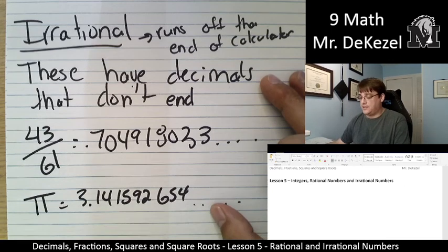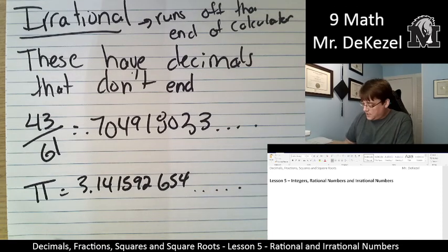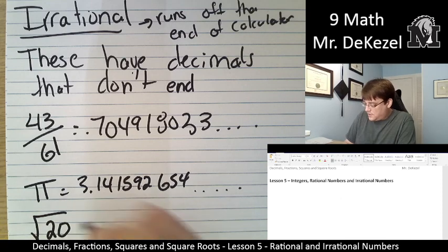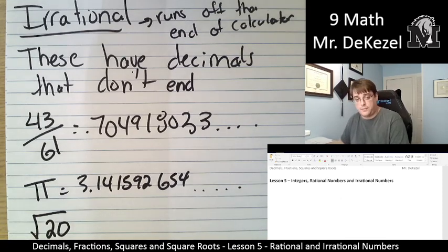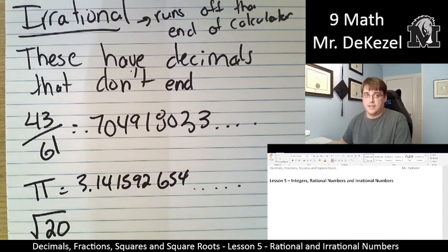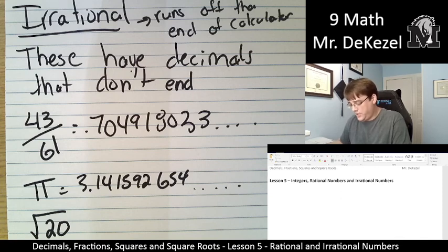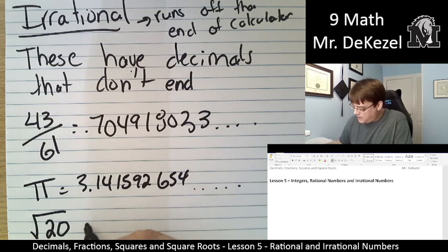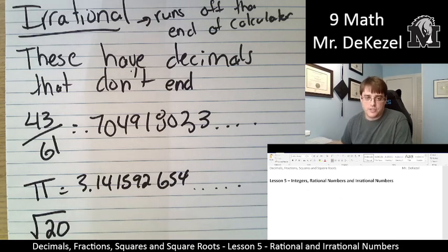And as well, any number that is under a root that isn't a perfect square. So for example, the root of 20 is an irrational number. We don't know exactly what that is. If we did that in our calculator, the decimal would go on forever. So the root of 20 is an irrational number. Any number under a root sign.